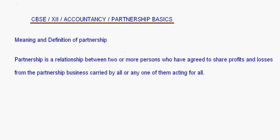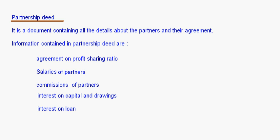The important documents in a partnership include the partnership deed, which is a written document. It mainly consists of the agreement on the profit sharing ratio — partners agree on a particular ratio and profits or losses are shared in that ratio. It also covers salaries of partners, commissions, interest on capital and drawings, and the rate of interest on loan.